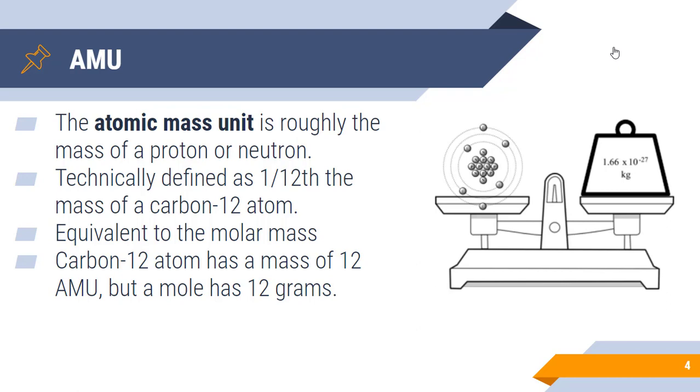This is technically defined as 1/12th the mass of a carbon-12 atom, which makes sense that it's roughly the mass of a proton or neutron because carbon-12 has 12 protons and neutrons, that is its mass number. If it's 1/12th of that, then an atomic mass unit would be the mass of 1 proton or neutron.